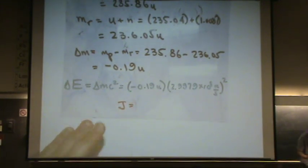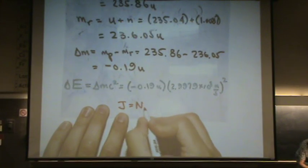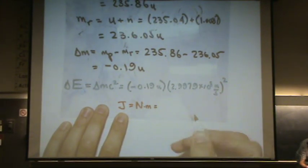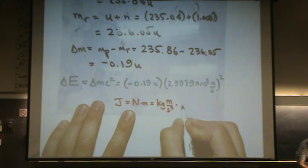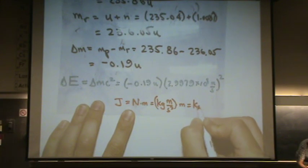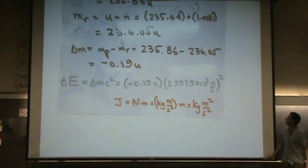a joule, that's a newton meter. A newton is a kilogram times meters per second squared, and we've still got our meter. So this is a kilogram meter squared per second squared. So notice how it matches up.